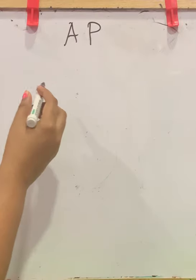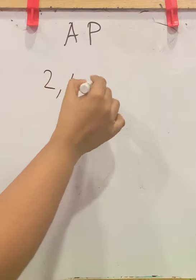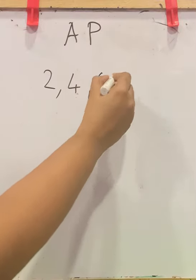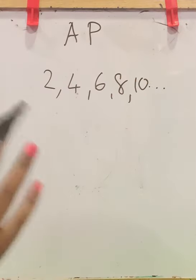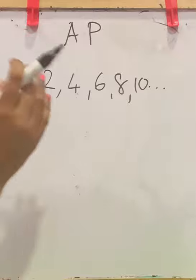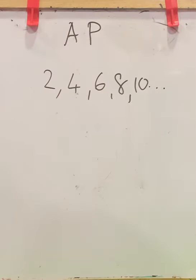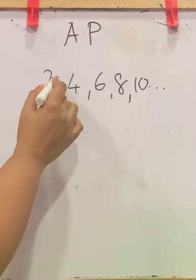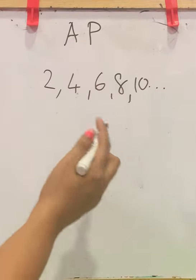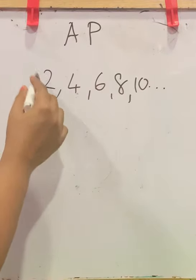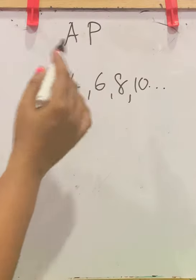If we are considering multiples of 2, this is a sequence and there is a particular order followed by each number. Each number is increasing by 2: 2, 2 plus 2 is 4, 4 plus 2 is 6, 6 plus 2 is 8.